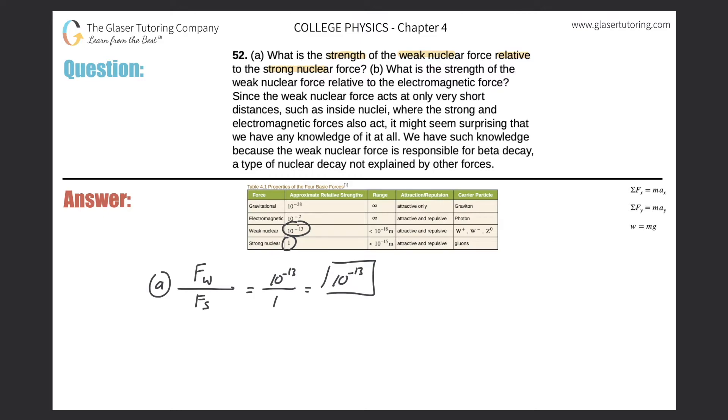Let's turn our attention to letter B. So what is the strength of the weak nuclear force relative to the electromagnetic force? So what's in the denominator this time? The electromagnetic force. So here's part B.